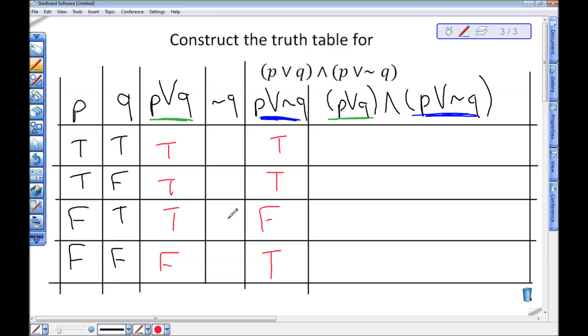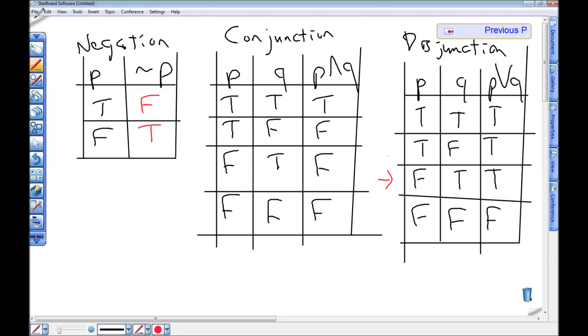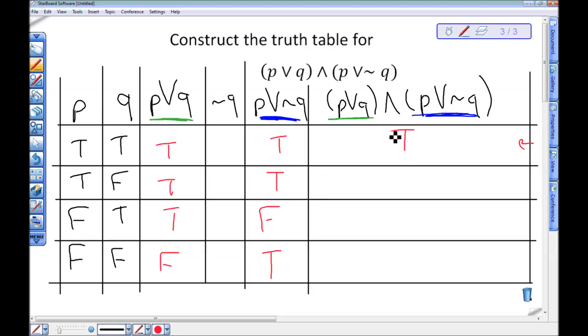So when I'm trying to fill in this first spot, I see that I have true and true. Looking back at my truth table for and, true and true is true. So I'm going to put a T here.